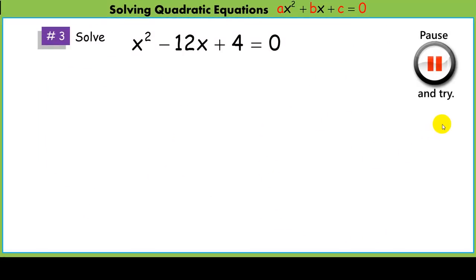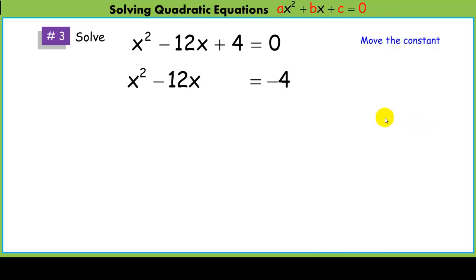Okay, one more problem. Give it a shot. Okay, as before, we move the constant over to the other side, making room for our magic number. We're going to complete the square. We're taking that negative 12, we're going to divide it by 2 and square it, making a perfect square trinomial.